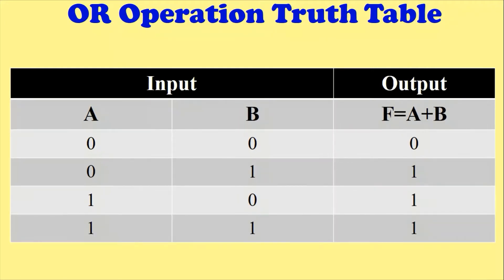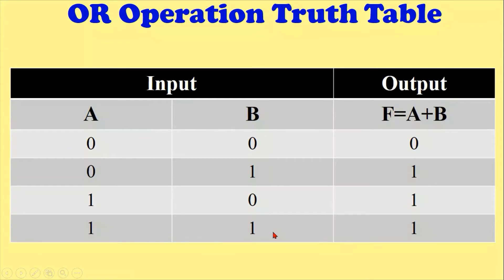This completes the truth table of the AND operation. Now let's move to the OR operation truth table. We have the same combinations of A and B: if A is zero and B is zero, decimal value is zero; if A is zero and B is one, decimal is one; if A is one and B is zero, decimal value is two; if A is one and B is one, decimal value is three.